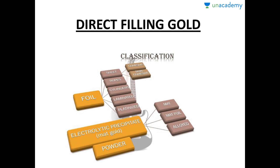Direct filling gold is classified into three types: number one is foil, number two is electrolytic precipitate also known as mat gold, and number three is powder. Foil is further classified into sheets, ropes, cylinders, laminated, and platinized.